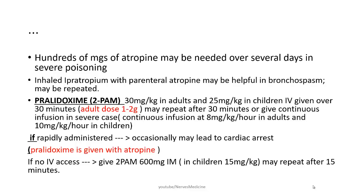Inhaled ipratropium with parenteral atropine may be helpful in bronchospasm. Pralidoxime: 30 mg per kg in adults and 25 mg per kg in children IV given over 30 minutes. The usual adult dose is 1 to 2 grams; may repeat after 30 minutes or give a continuous infusion in severe cases — continuous infusion at 8 mg per kg per hour in adults and 10 mg per kg per hour in children.